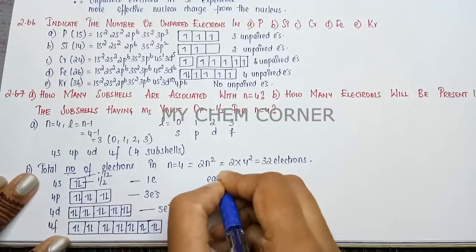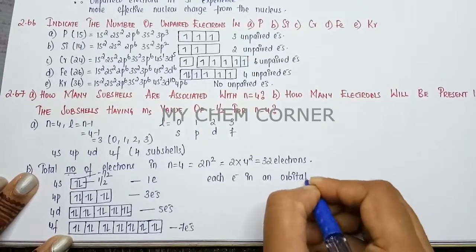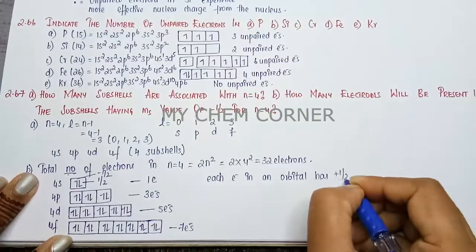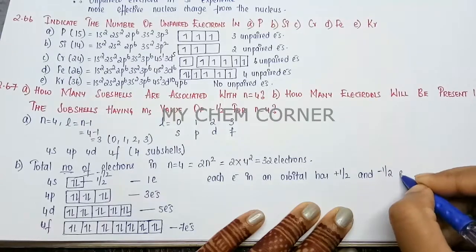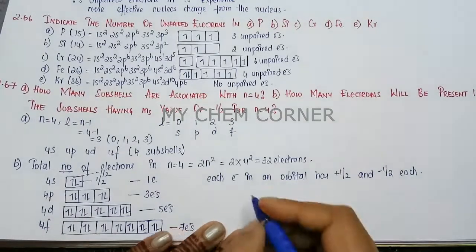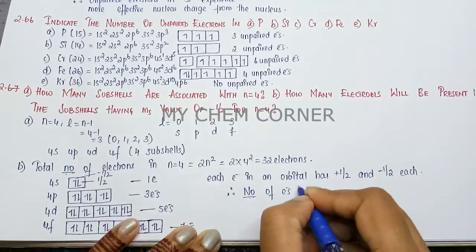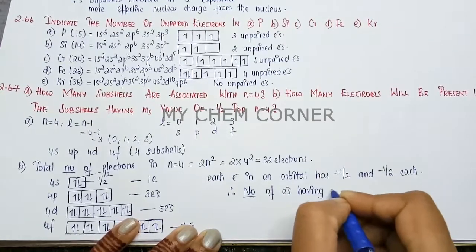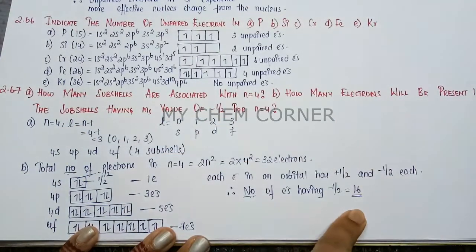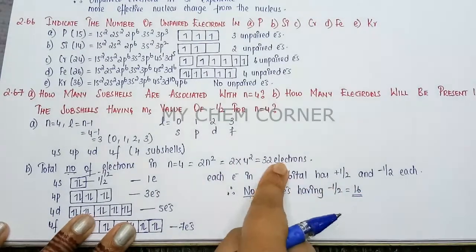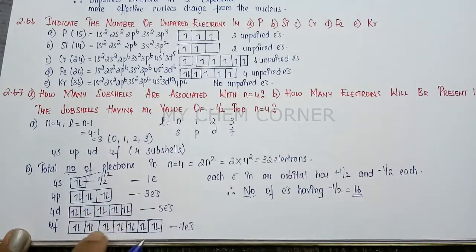So we can write each electron in an orbital has plus half and minus half each. Therefore, number of electrons having minus half is 16. So how many electrons will be present with a minus half? It is 16 electrons. Because minus half is 16, the other plus half is another 16. Total together will make 32 electrons. Instead of doing formula method, you can also manually count them and find out how to do it.